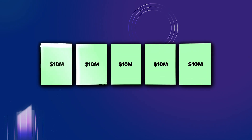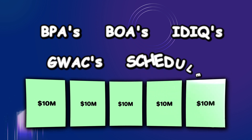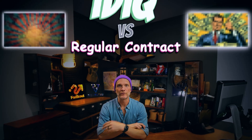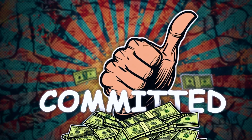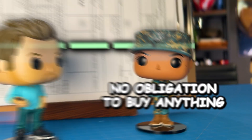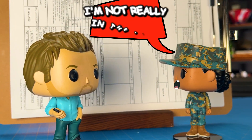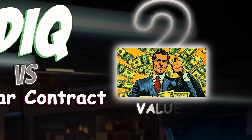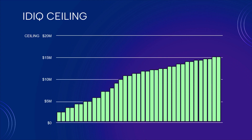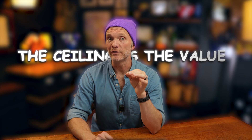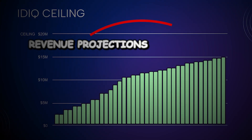These framework agreements have lots of different names — BPAs, BOAs, IDIQs, GWACs, and schedules — but there are a couple of big differences between them and regular contracts. First, with a contract, the government is committed to buying, while with a framework agreement, the government has no obligation to actually buy anything. Second, contracts have a defined value you're going to get, while framework agreements have a ceiling, which sets the maximum amount the government can buy, not the amount they will buy. But a lot of new businesses think the ceiling is the value and make revenue projections based on that ceiling.